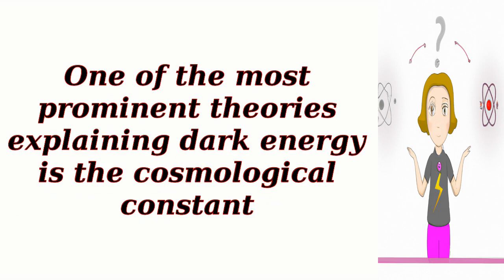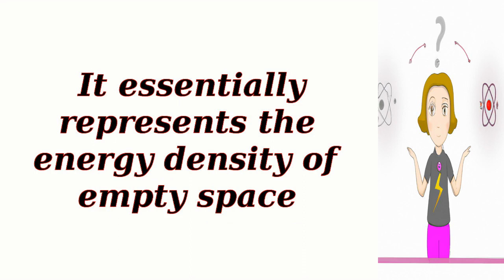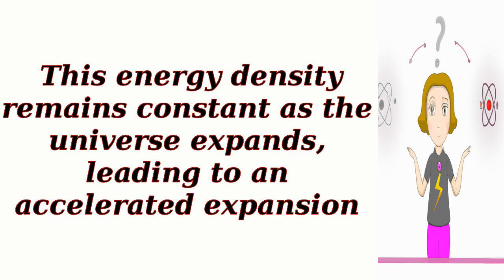One of the most prominent theories explaining dark energy is the cosmological constant. Proposed by Albert Einstein in 1917, the cosmological constant is a constant term in Einstein's equations of general relativity that can be used to describe a repulsive force acting on the universe. It essentially represents the energy density of empty space. According to this theory, empty space is not truly empty but is filled with a constant energy density associated with dark energy, which remains constant as the universe expands, leading to an accelerated expansion.